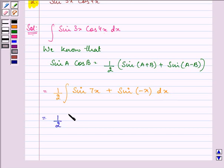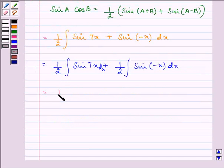The integral of sine 7x dx equals minus cos 7x divided by the derivative of 7x, which is 7. So we have 1/2 times (-cos 7x / 7) plus 1/2 integral of sine(-x) dx.